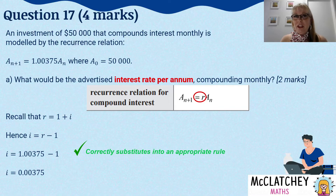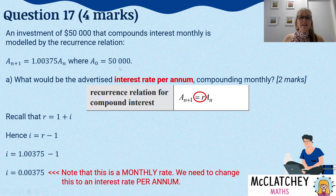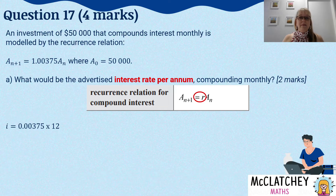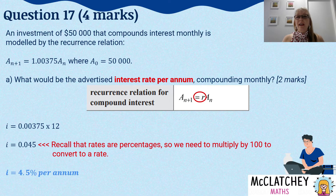You might be tempted to think that you're done — you're not. Remember, whenever we use a recurrence relation, we use the compounding rate per period. We need to find the interest rate per year — per annum means year. So we need to change this rate, which is currently a monthly rate, into a yearly rate. We multiply that by 12 and we get 0.045. But rates are percentages — we're asked to find the interest rate, not an interest decimal. So we multiply by 100 to get an interest rate of 4.5% per annum.